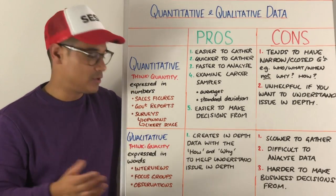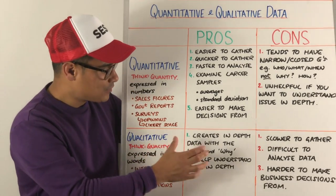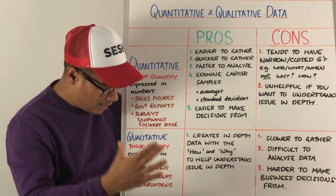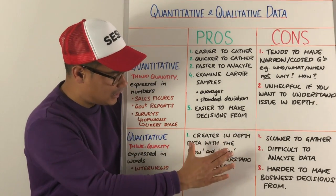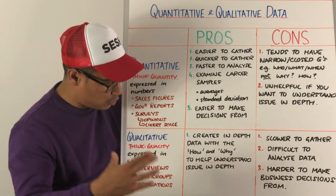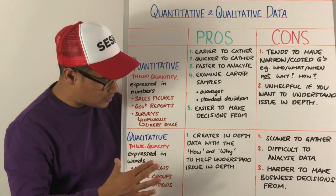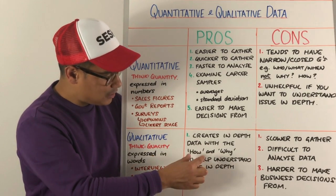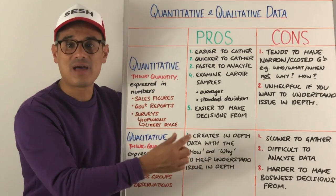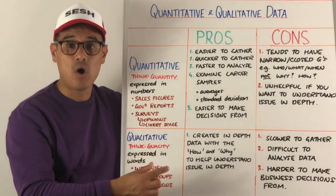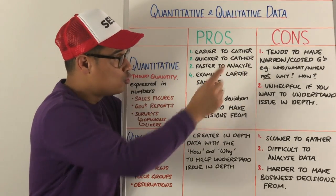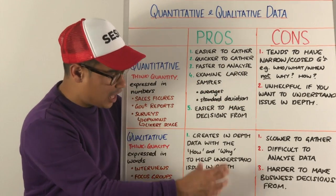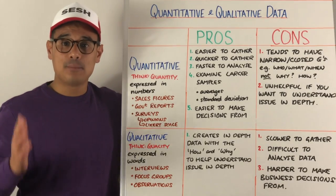The advantages and pros of qualitative data: you can get more in-depth analysis because you're looking at it in words format. It creates depth because you can focus on the how and the why, as well as the who, what, and when. So you can understand the issue in depth.